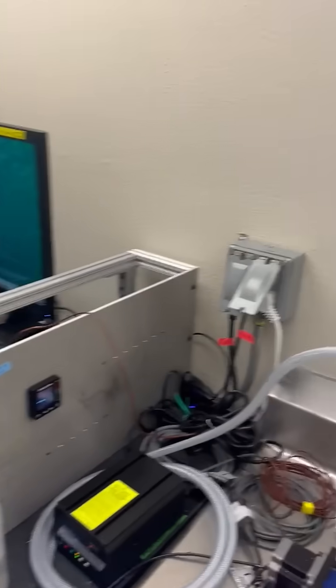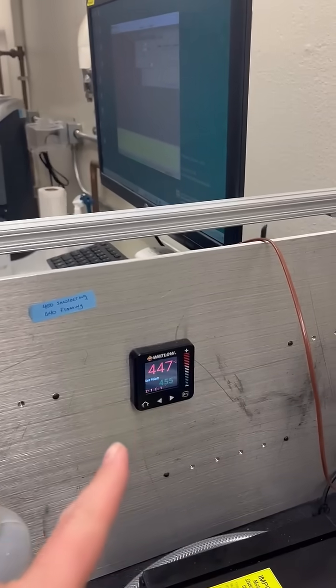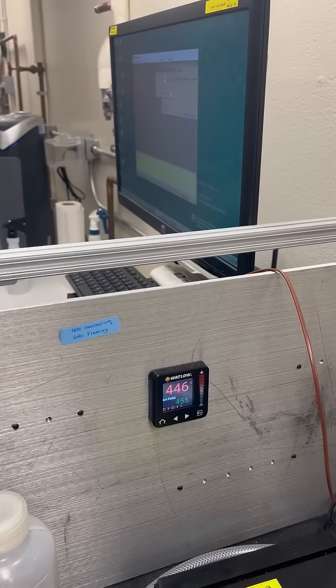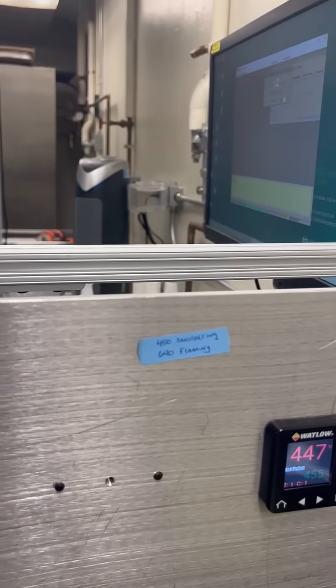Each day we come in and we plug in and turn on the furnace. This display here shows you the current temperature and the types of temperatures that we normally try to hit for both smoldering and flaming.